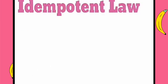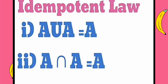Now let us talk about idempotent law. Idempotent law has two laws. First law is A union A is equal to A, and second law is A intersection A is equal to A.